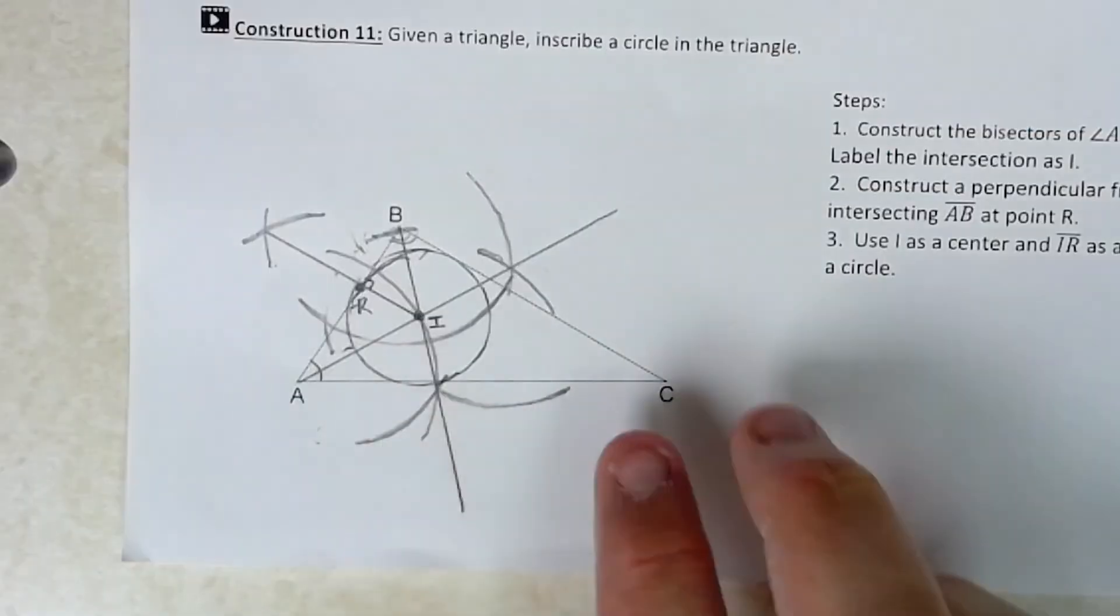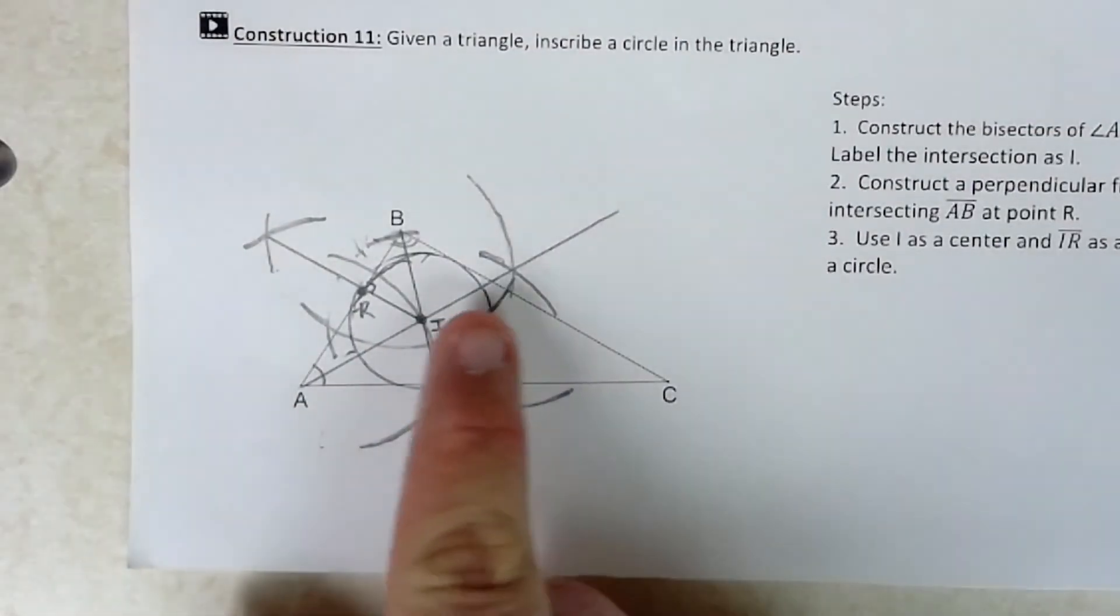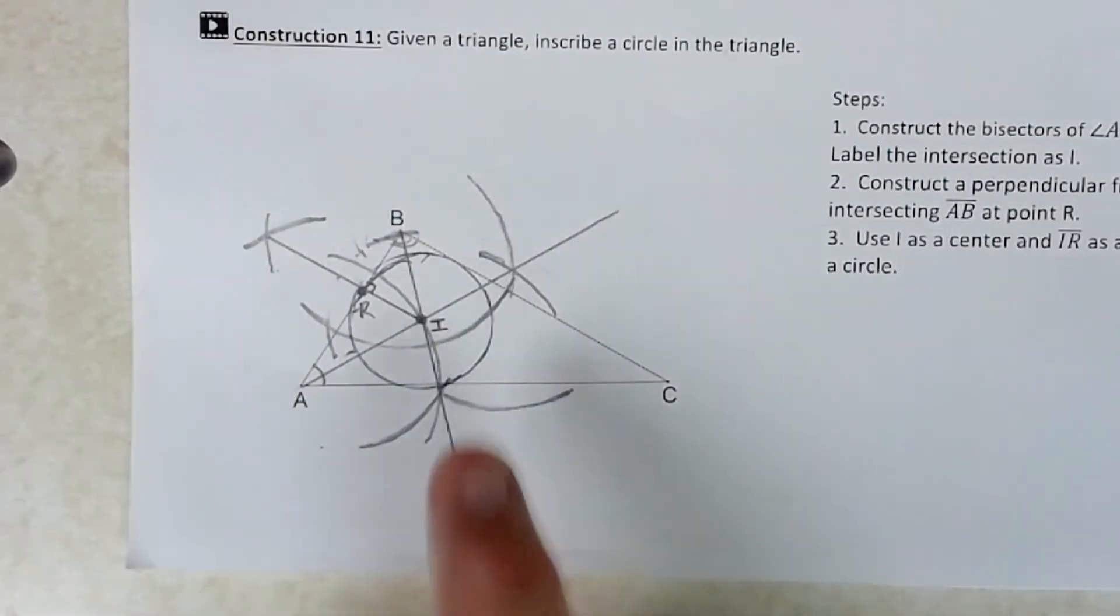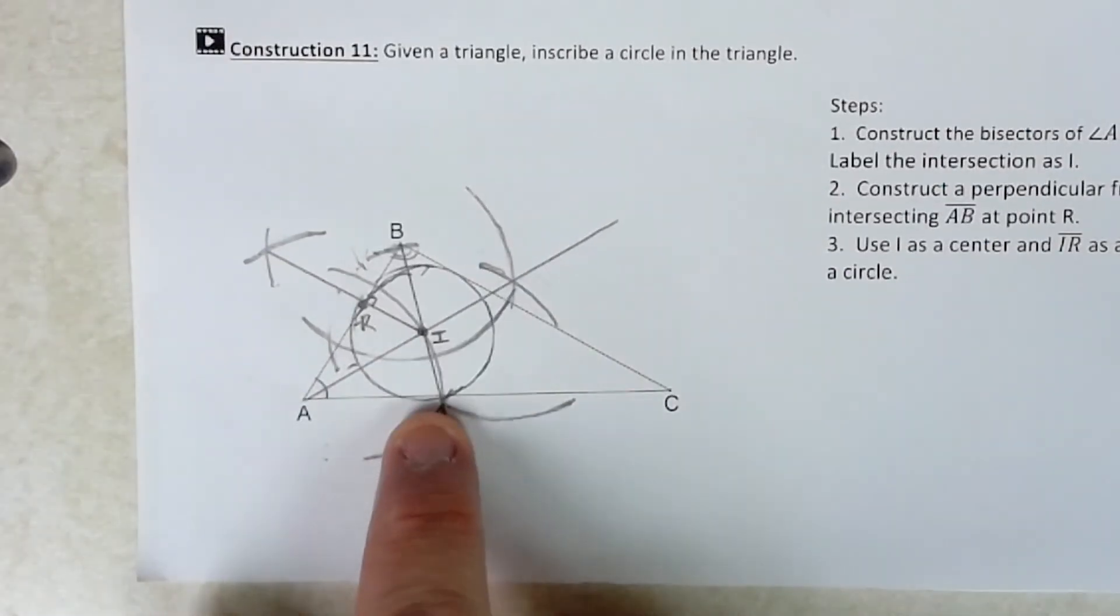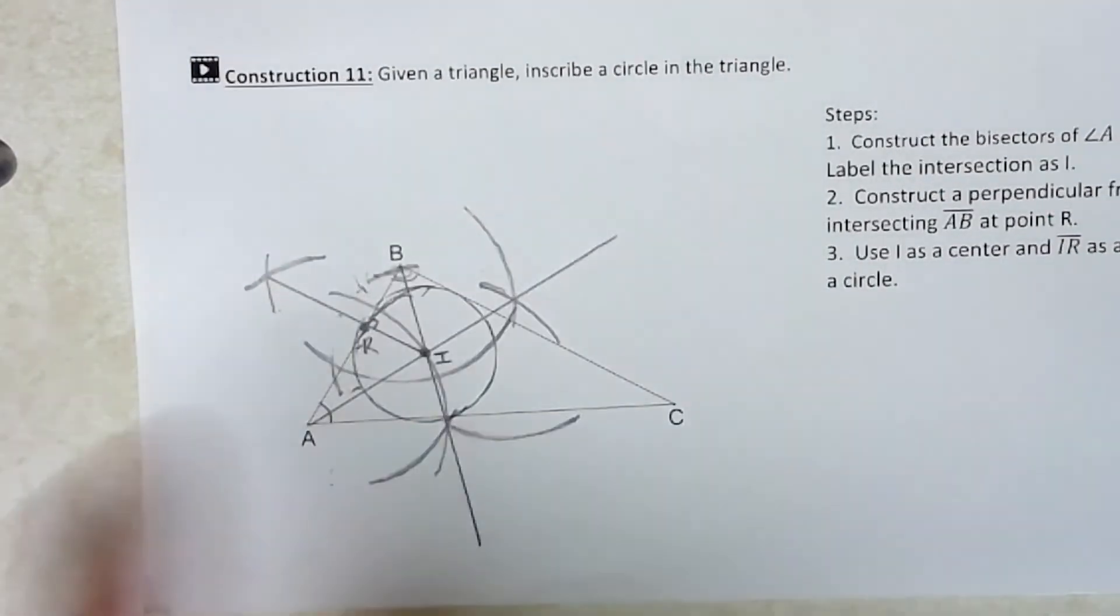The circle within the triangle itself, it should be just intersecting in three places here at side AC, AB, and BC. And that's how you get an inscribed circle.